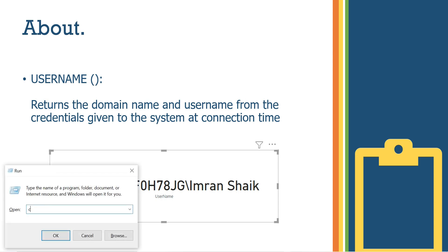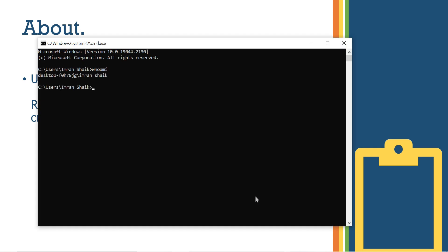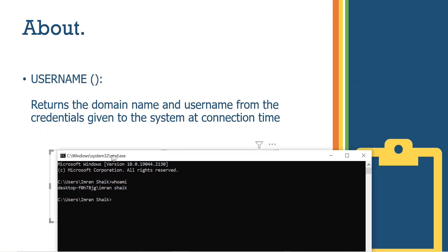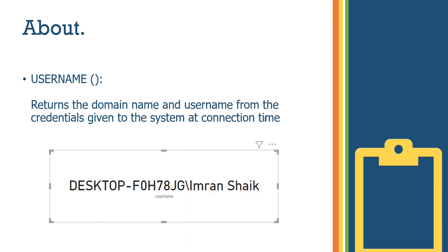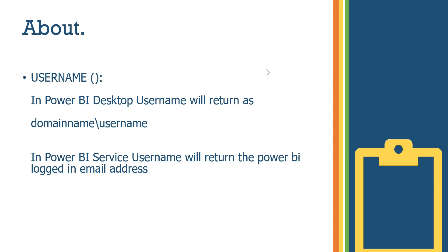For example, if we click on 'Who am I' link, we can see the domain name and username. We can use DAX to execute the USERNAME function and see the output. In Power BI desktop, you can execute the USERNAME DAX function and it returns domain name and username. But in Power BI service, it returns the login email instead.